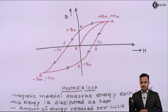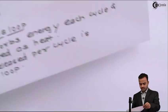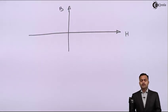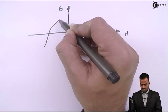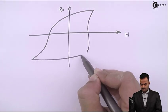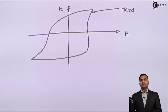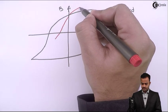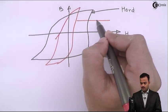To reduce the hysteresis loss, we select a magnetic material having a narrow hysteresis loop. If we use a hard magnetic material, it will have a very large hysteresis loop — we call this type of material a hard material. To have less hysteresis loss, the loop should be narrow like this — we call this a soft material.